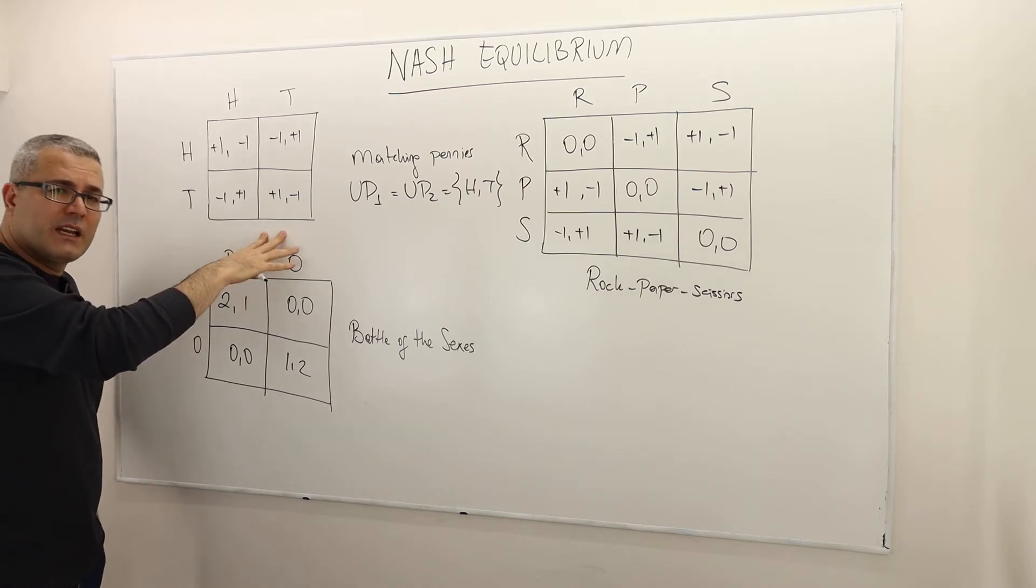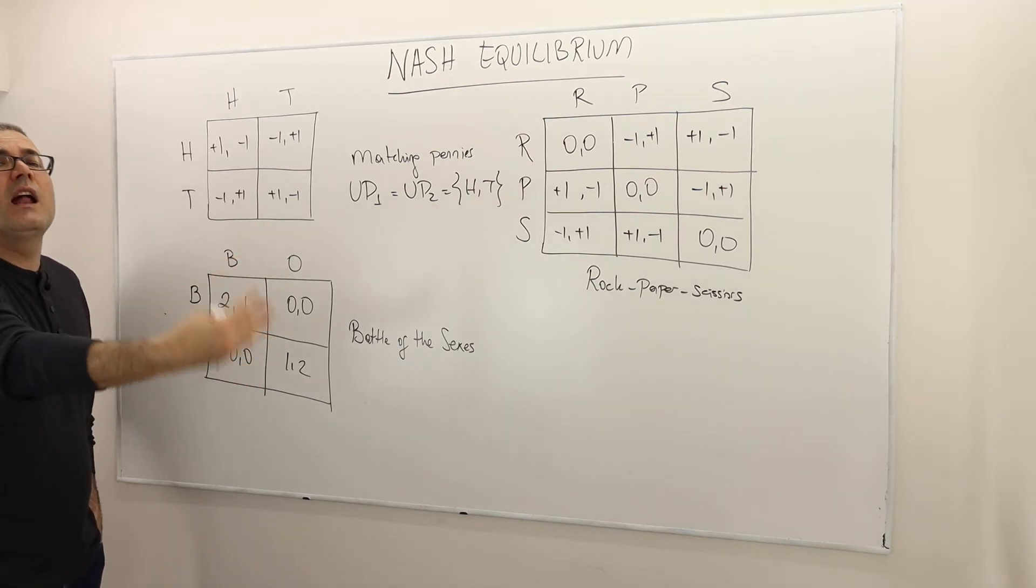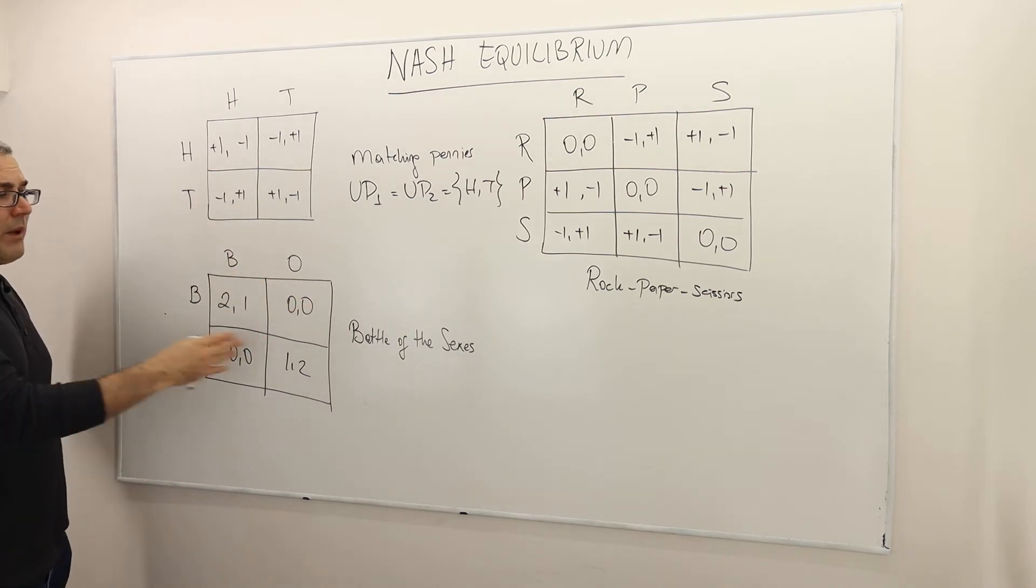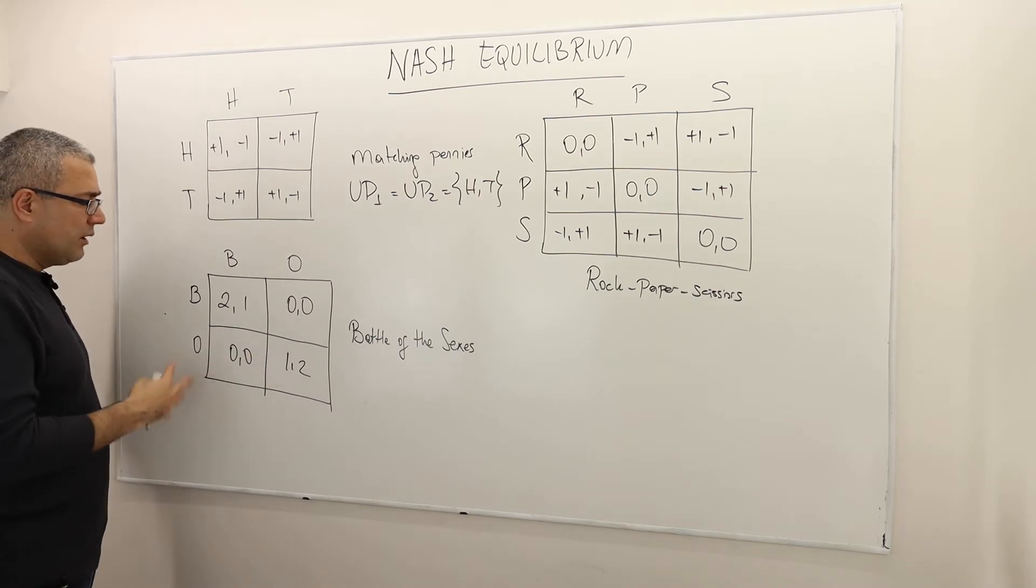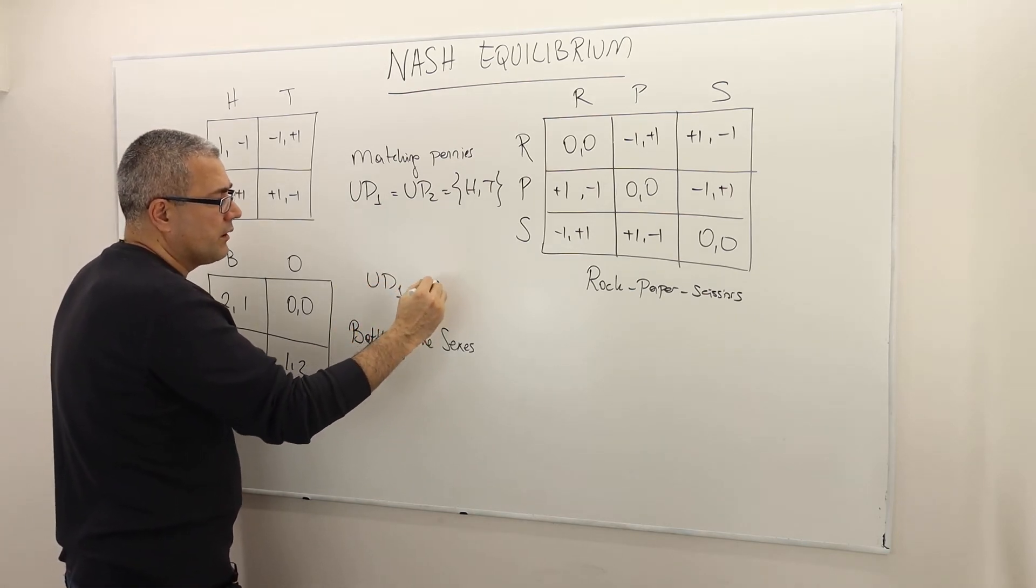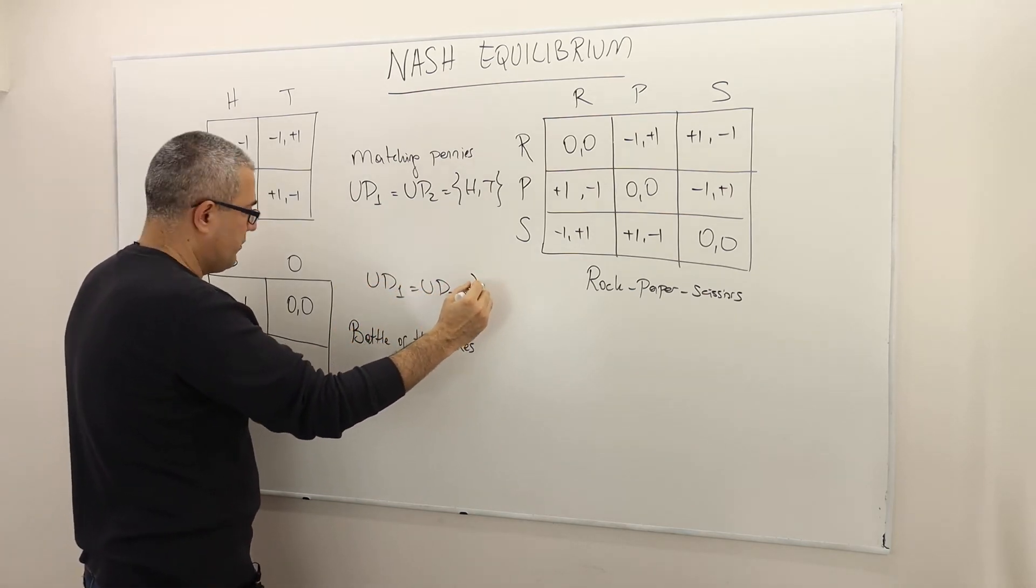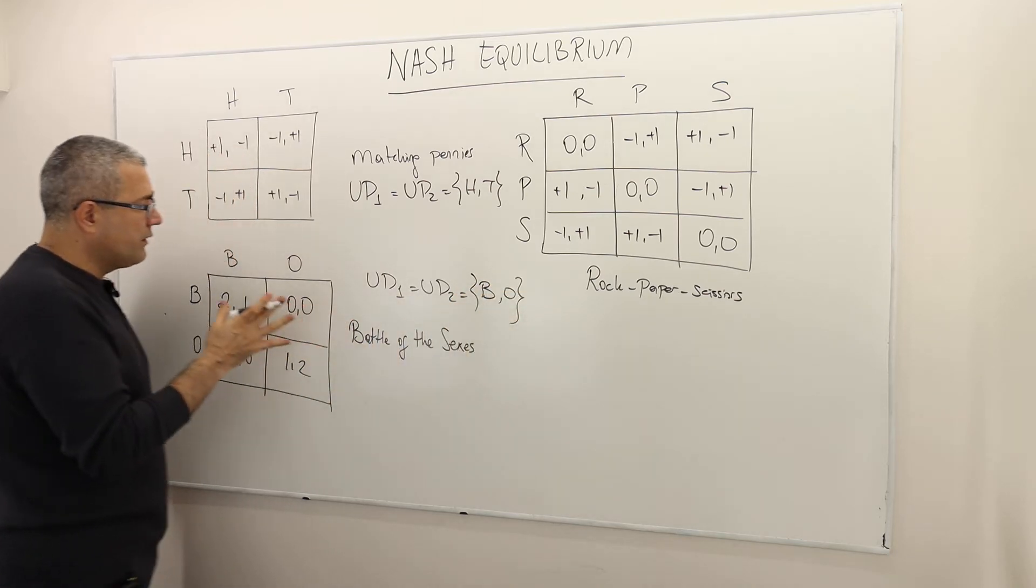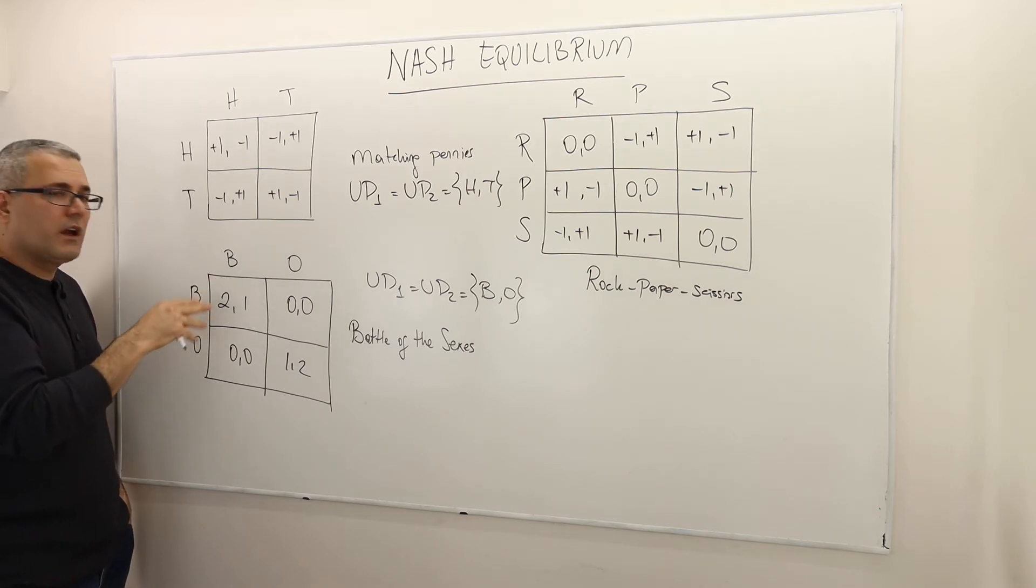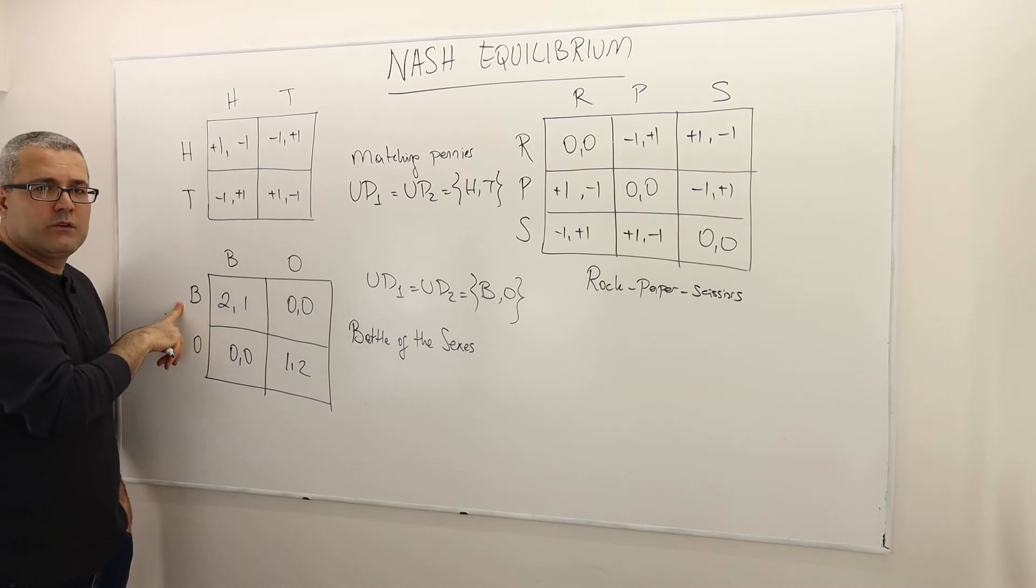Even for games like this, the solution concept should tell us something like, well, they're going to play specifically this strategy. Well, if you look at the Battle of the Sexes, for example, once again, what we see is that the undominated strategies for player one is equal to undominated strategies for player two. And it's B and O. Oh, by the way, the story of the Battle of the Sexes is simple. For example, you know, there's a married couple, they would like to go to an event tonight. It's either a boxing match or opera.